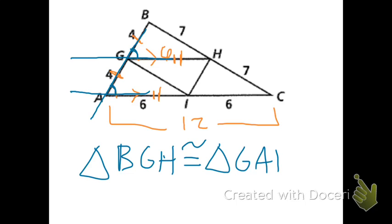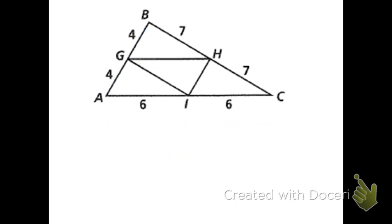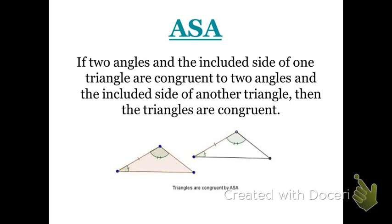The next triangle congruence conjecture is Angle-Side-Angle. If two angles and the included side of one triangle are congruent to two angles and the included side of another triangle, then the triangles are congruent. Included means the side has to be between the two angles that we know are congruent.